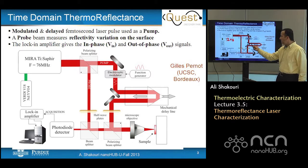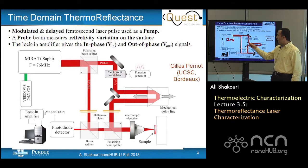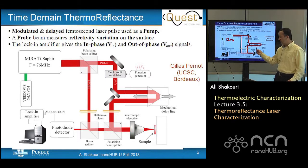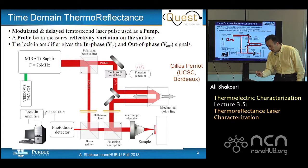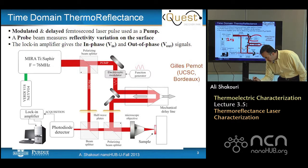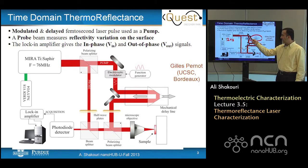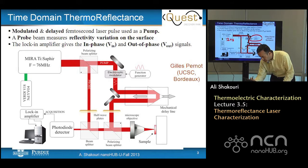You have a pump that comes and heats the sample, creating the impulse heating, and a probe that comes a little later to sample the surface reflection or temperature. Because the change in reflection is small, we need to do lock-in detection. This lock-in is done by putting a function generator and modulating the pump. The frequency of this modulation could be on the order of 0.1 to 10 megahertz.